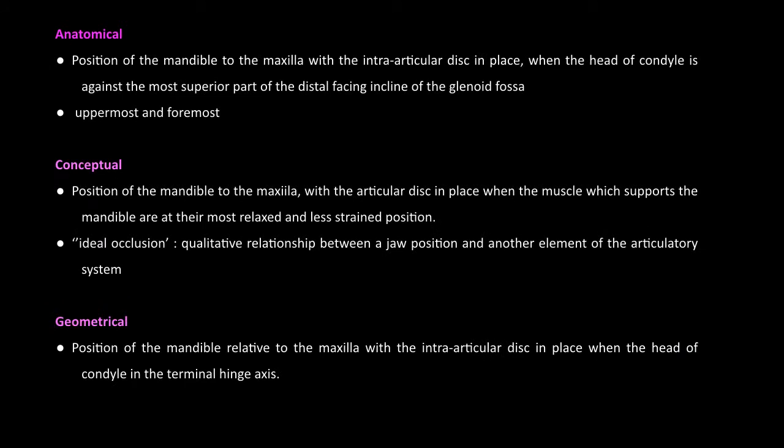Anatomically, centric relation can be described as the position of the mandible to the maxilla with the intra-articular disc in place, when the head of the condyle is against the most superior part of the distal-facing incline of the glenoid fossa. It can be paraphrased as uppermost and foremost.